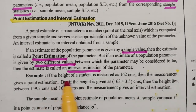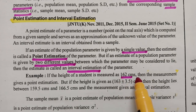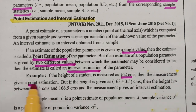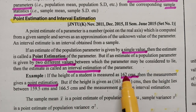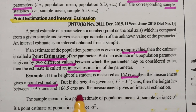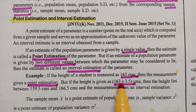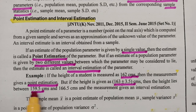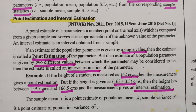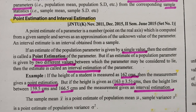Another example: if the heights of students are measured as exactly 162 centimeters, that single numeral is a point estimation. But if the height is given as 163 ± 3.5, then the height lies between 159.5 and 166.5 centimeters. That measurement is called an interval estimation. So if it is a single point, it is point estimation; if it is between two values, it is interval estimation.